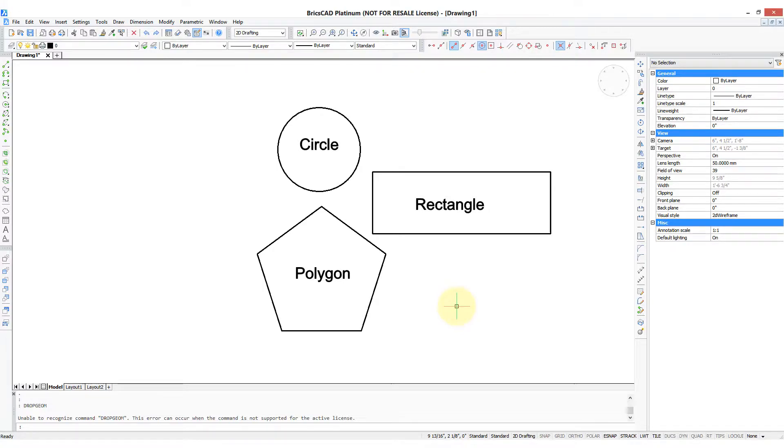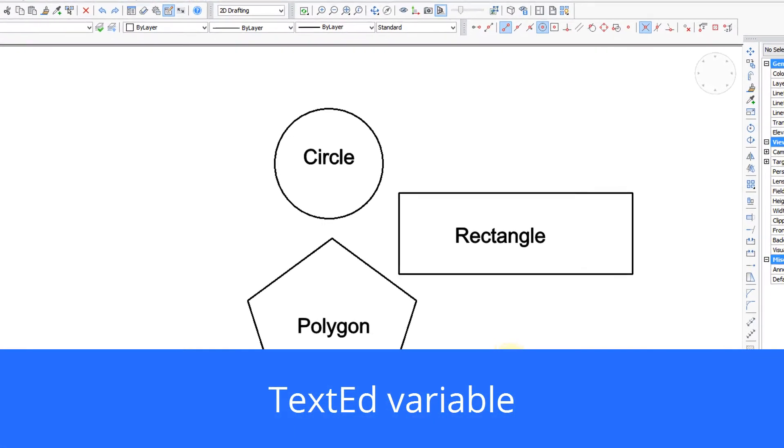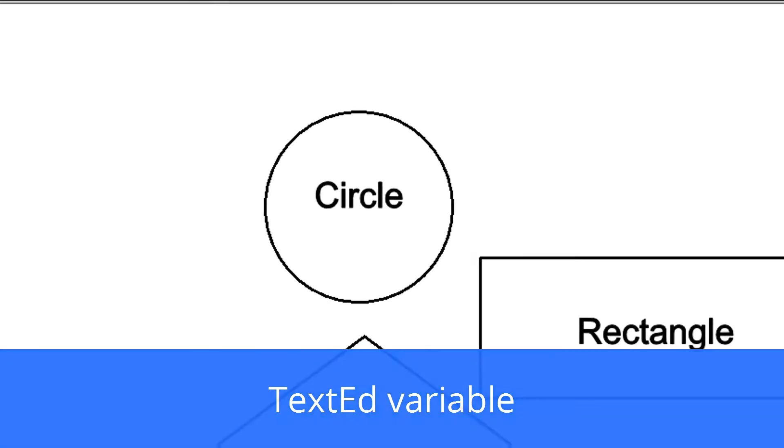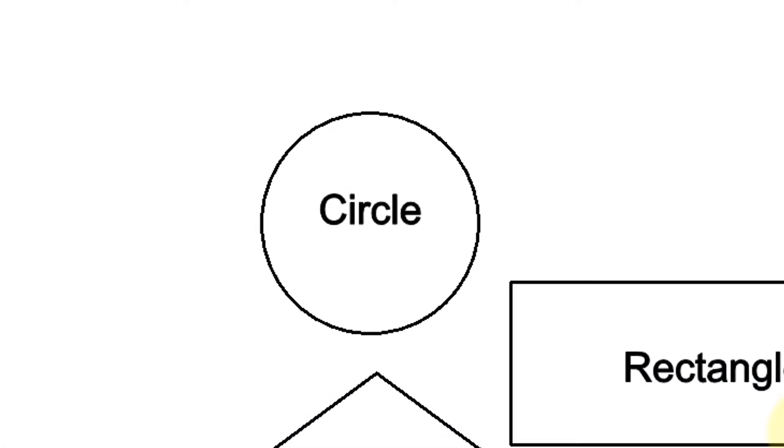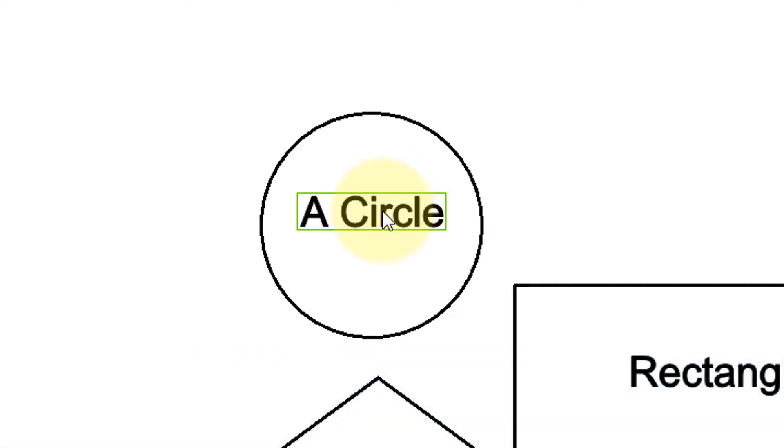The TextEd variable was added to version 18 of BricsCAD to give you an option of how you would like to edit text in place. In place means editing it right where the text is. So I've double clicked the word circle. And I can now edit it. Press enter to end the editing session. Press enter a second time to exit the ddedit command.